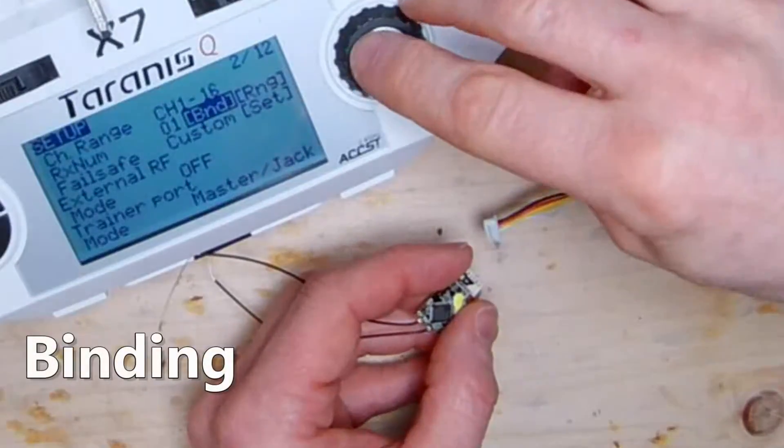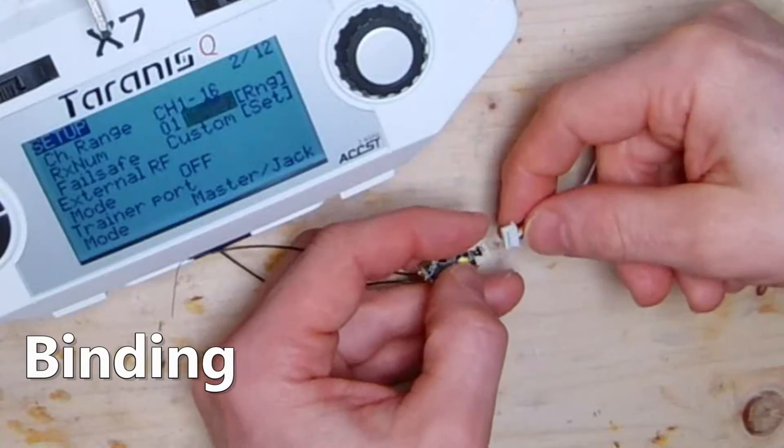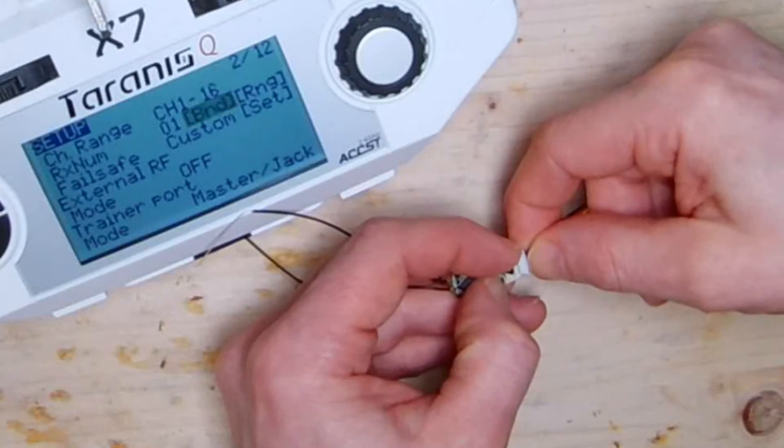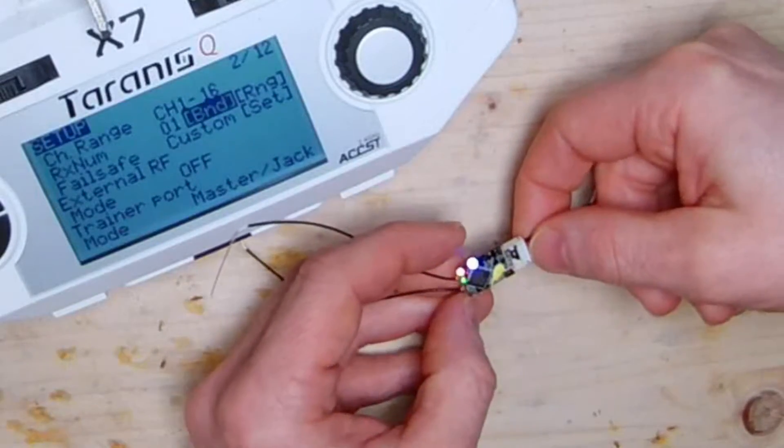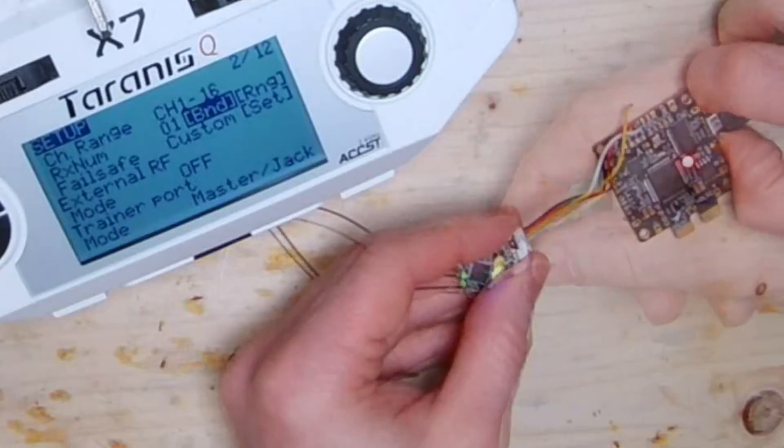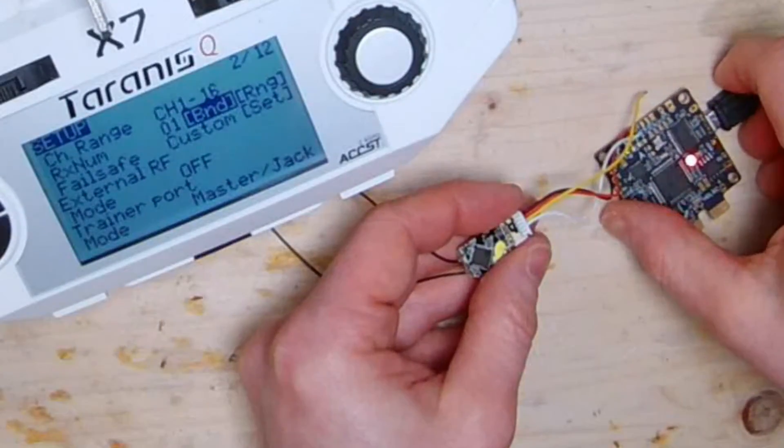For binding, activate bind on the TX and press the button on the RX and power it up. You should see flashing red light and a solid green light. After successful bind, you see a green flashing light.